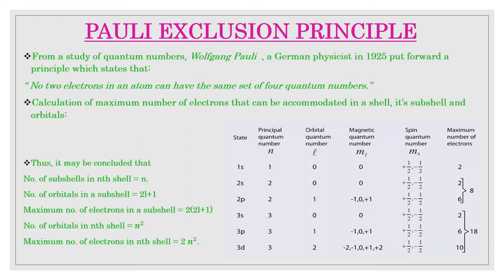It follows that in an atom any two electrons may have the same values for any three of the quantum numbers, but the fourth must be different. For any particular orbital described by three quantum numbers n, l, and m, there are two values of spin quantum number: plus half and minus half. For example, the 3s orbital can have two electrons — one with n equals 3, l equals 0, m equals 0, s equals plus half; and the other with n equals 3, l equals 0, m equals 0, s equals minus half — both electrons having opposite spin.